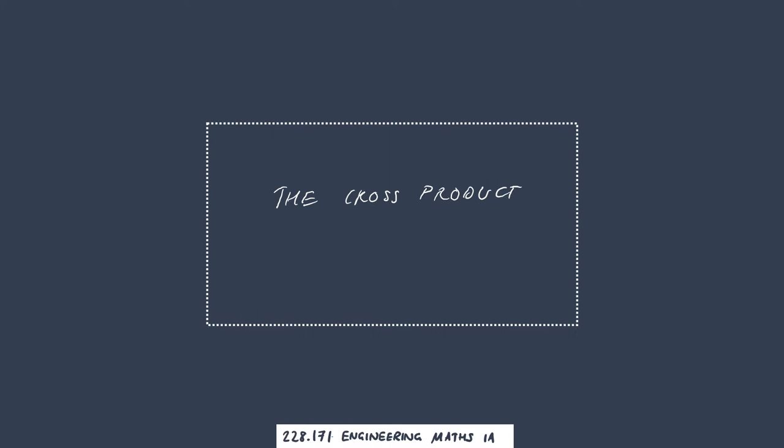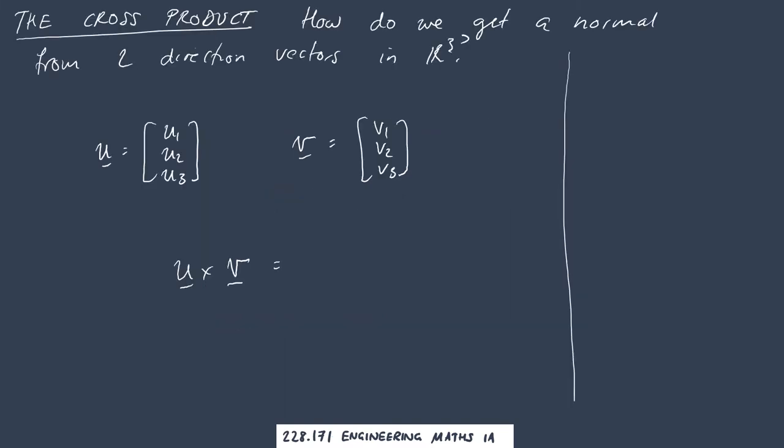It's a product of two vectors that gives a third vector that is orthogonal to the other two vectors involved. We'll start by showing you how to actually calculate this thing and then look at some of the properties that this vector has.